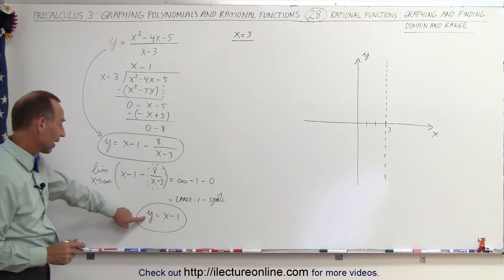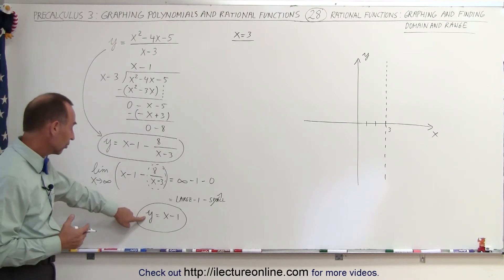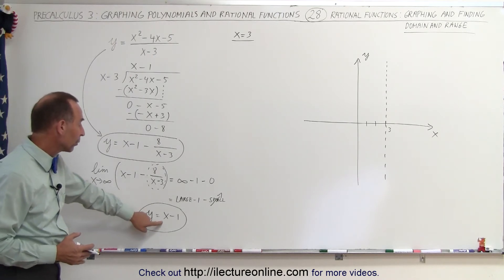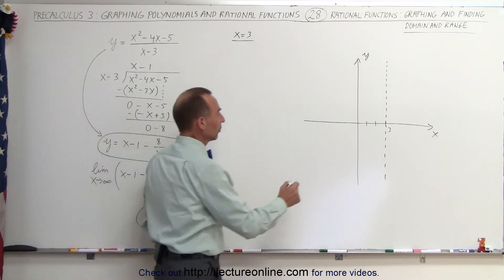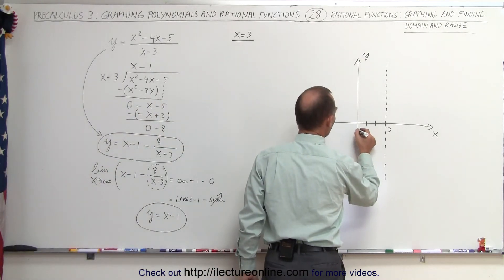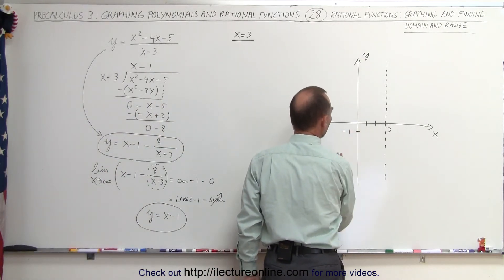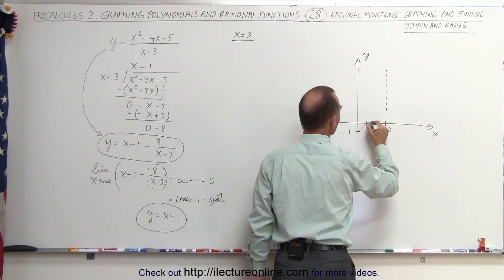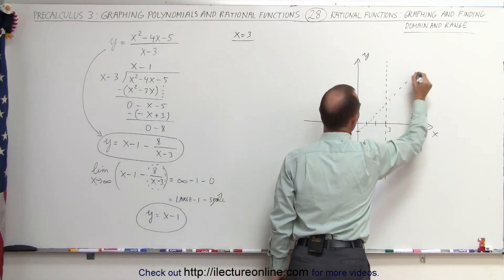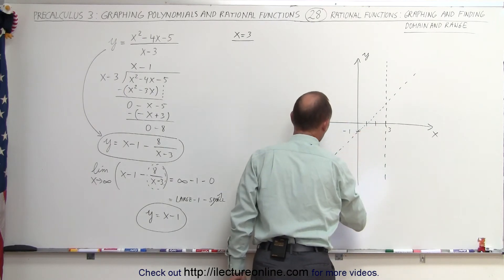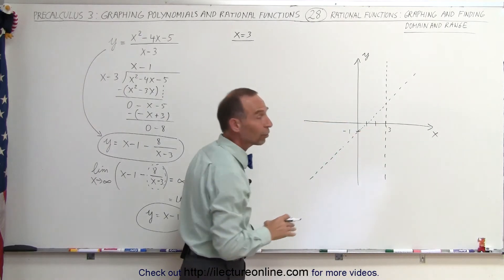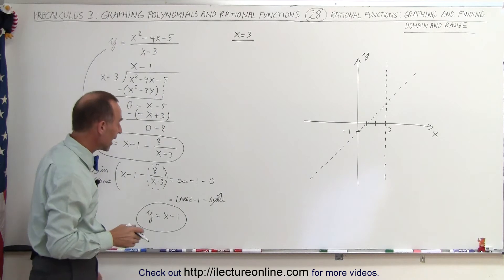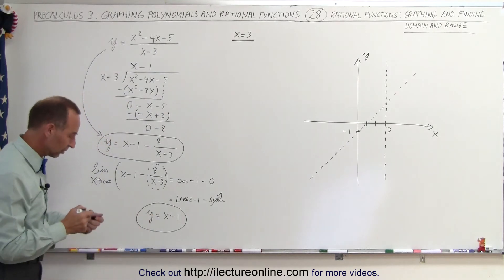This here will give us our next asymptote. We all know how to graph this. This is a straight line equation, y equals x minus 1. The minus 1, that's where the intercept is, which is right here at minus 1. The slope is 45 degrees. So here is our next asymptote. Notice in this case, our asymptote is not horizontal or vertical, it's at a 45-degree angle.